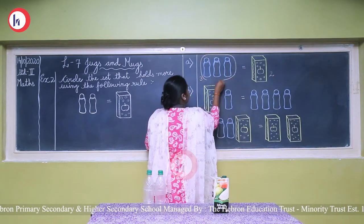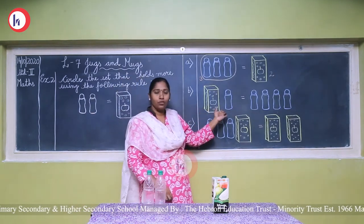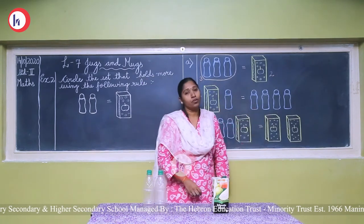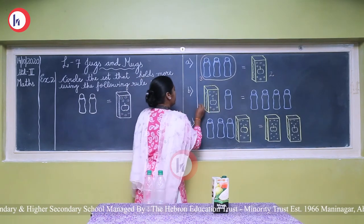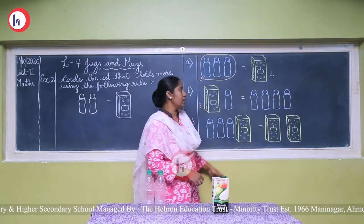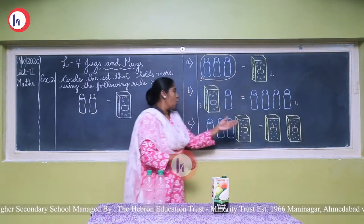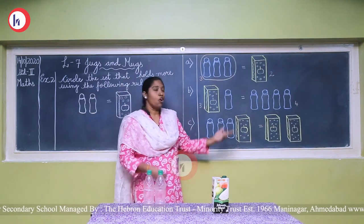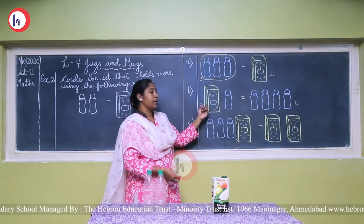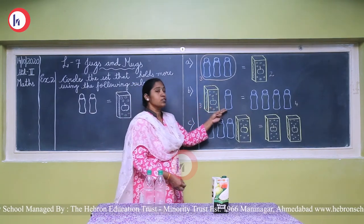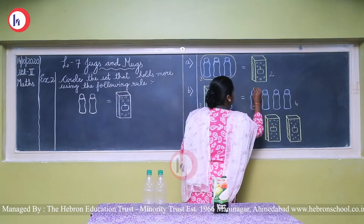In the second question we have one pack and one bottle on one side, and four bottles on the other side. The pack contains two bottles, so two plus one equals three — that side has three bottles' worth of juice. The other side has four bottles. Obviously four is more than three, so we circle the four bottles side.